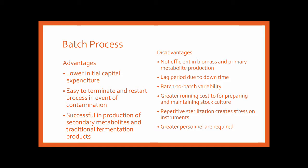A disadvantage of batch process is that it is not efficient for biomass and primary metabolite production. Primary metabolites and biomass are optimally produced during the exponential growth phase, but since the batch process has a defined beginning and end, it will inevitably go past the exponential phase into the stationary phase, at which point you need to stop and harvest. For secondary metabolites, batch process is more ideal because secondary metabolites appear during the stationary phase, which can be prolonged.